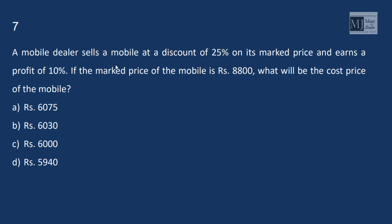A mobile dealer sells a mobile at a discount of 25% on its marked price and earns a profit of 10%. If the marked price is 8,800, directly give discount on the marked price. So his received price is 6,600, which is giving him 10% profit on CP. That means CP is 6,000 rupees.